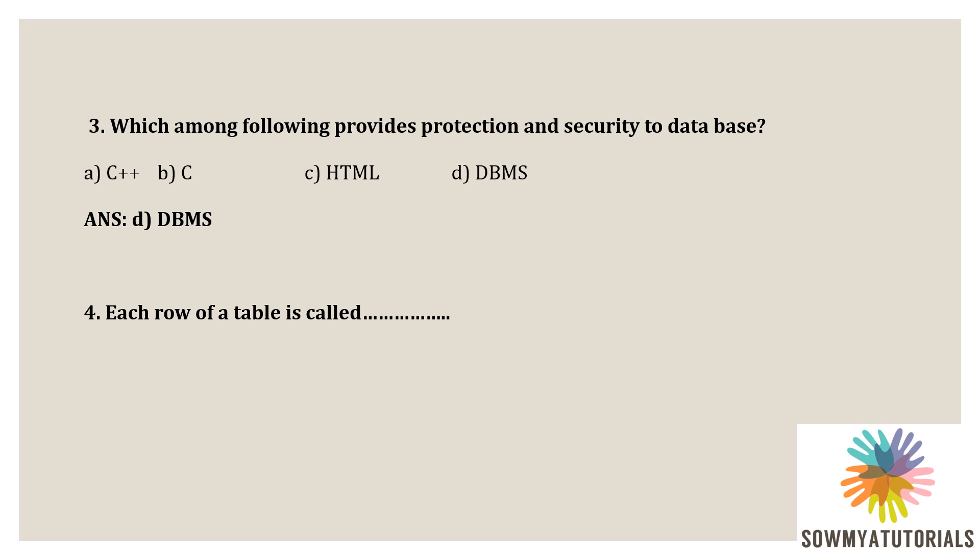Next question: each row of a table is called what? Options are A) attribute, B) field, C) tuple, D) domain. The correct answer is C — tuple. Each row of a table is called a tuple, also known as a row or a record. A single entry in a table represents a set of related data.